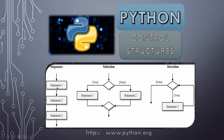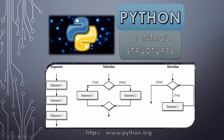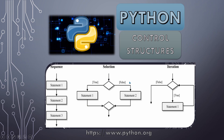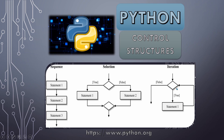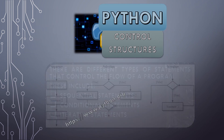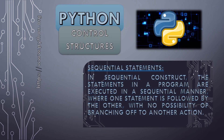In case of sequence, we have statement 1 followed by statement 2 and statement 3 and so on. In case of selection or conditional, a condition appears — if true, the flow moves one way; if false, it moves another way. In case of iteration, if the condition is true a set of statements executes and we go back until the condition becomes false, at which point execution stops.